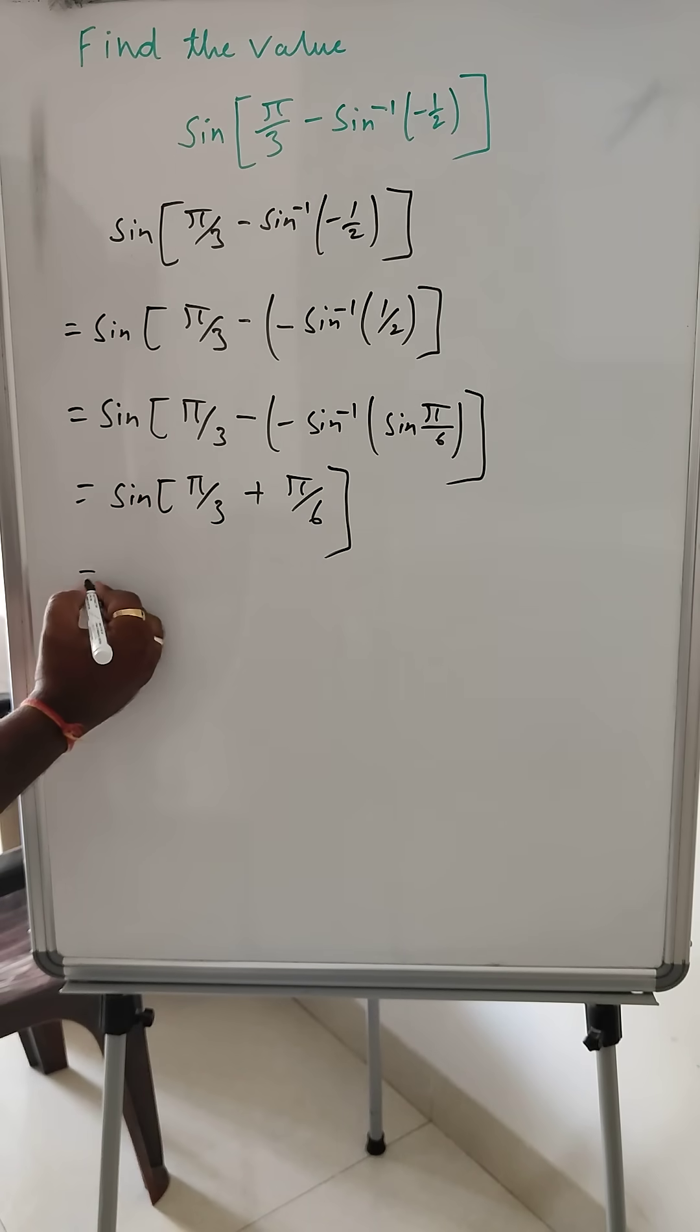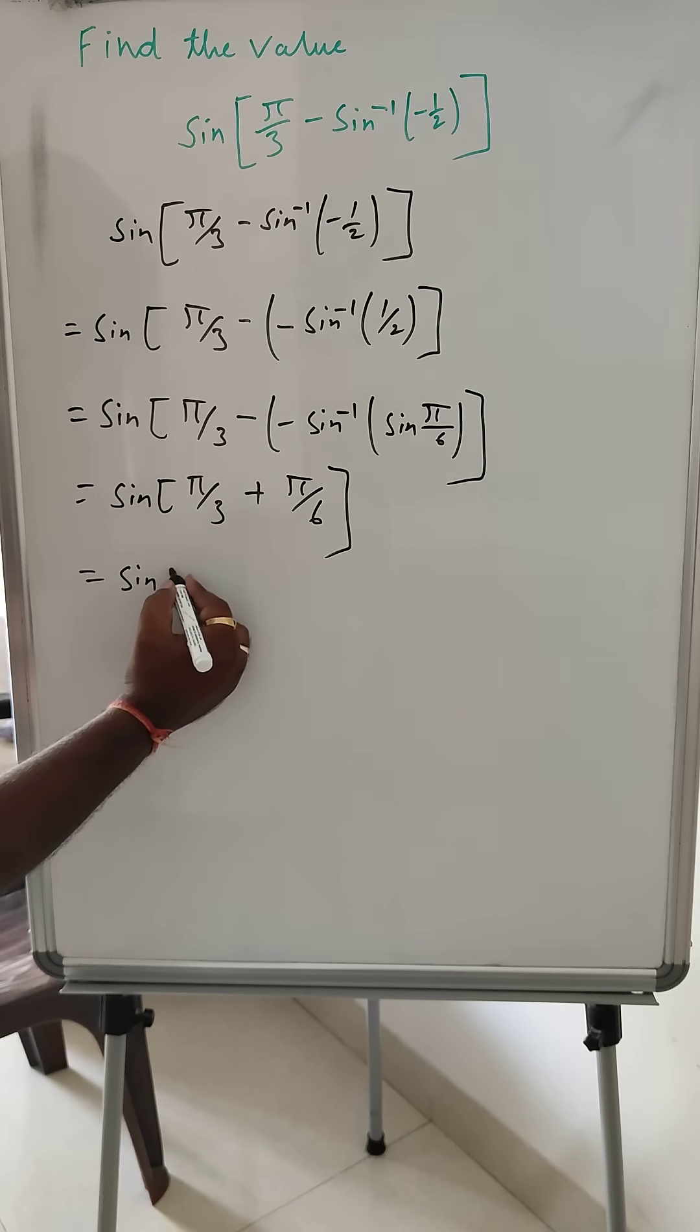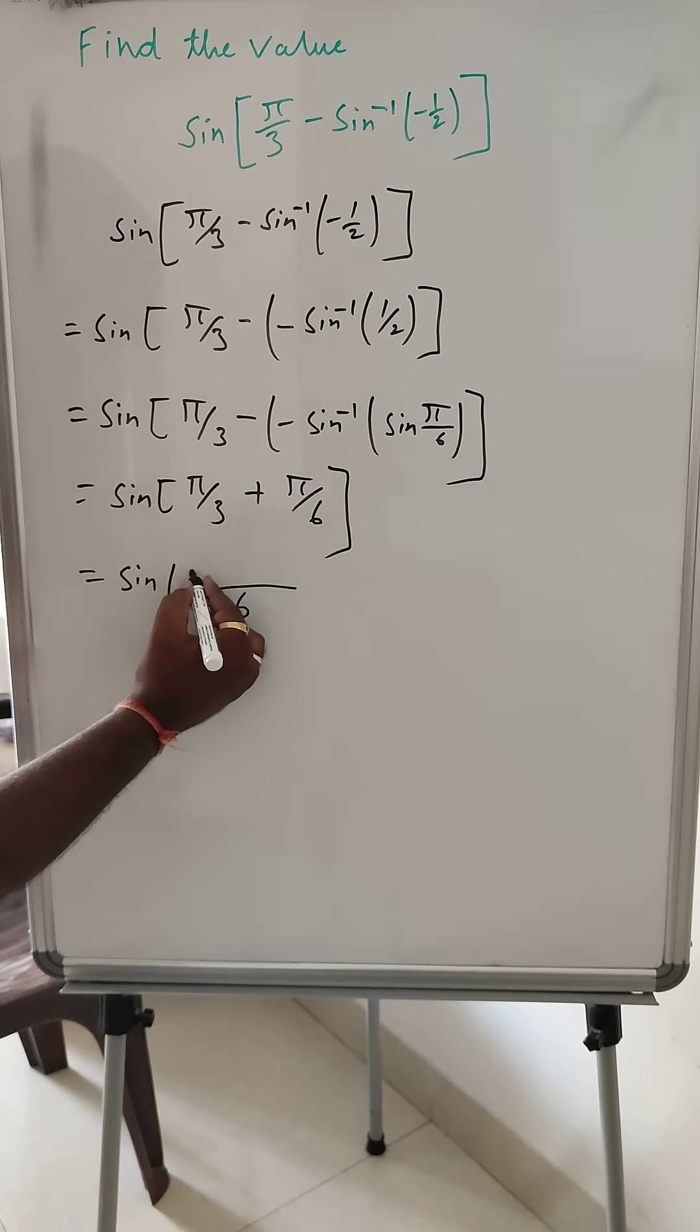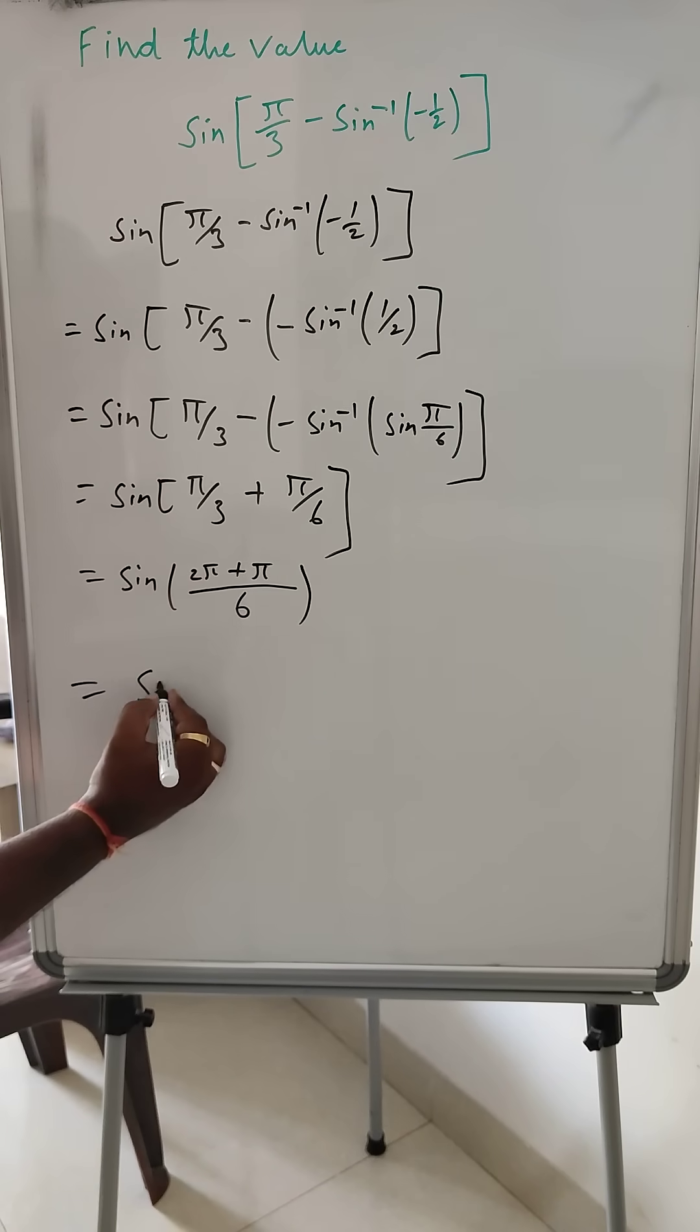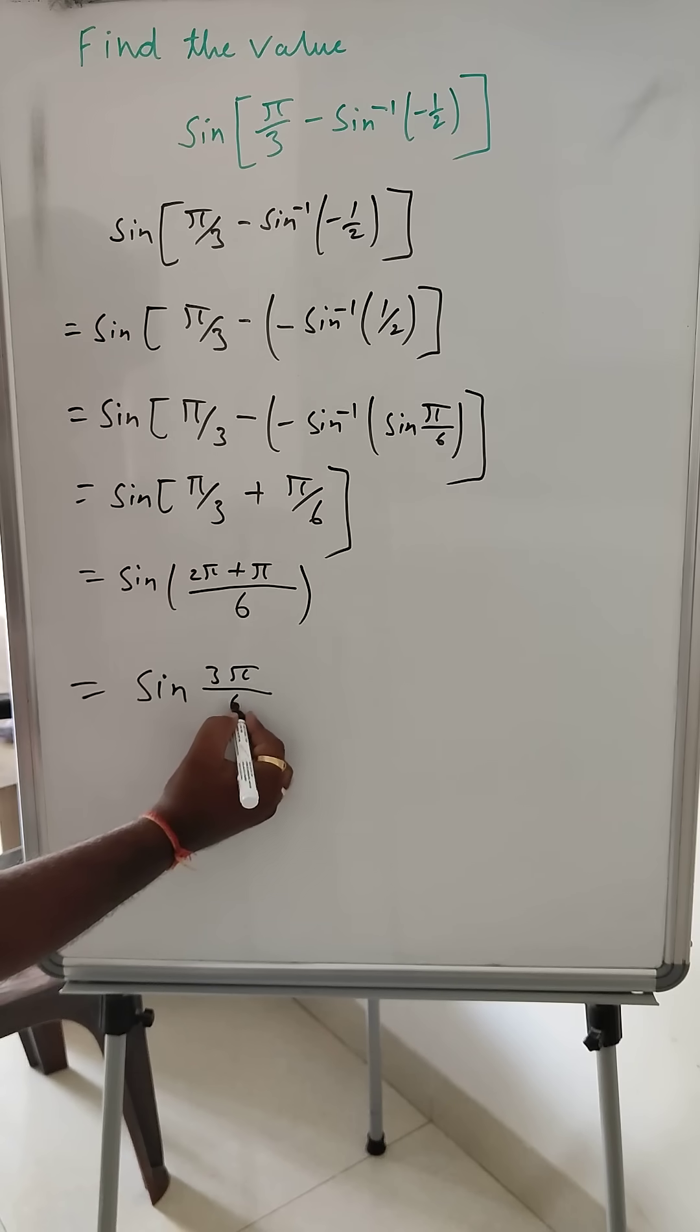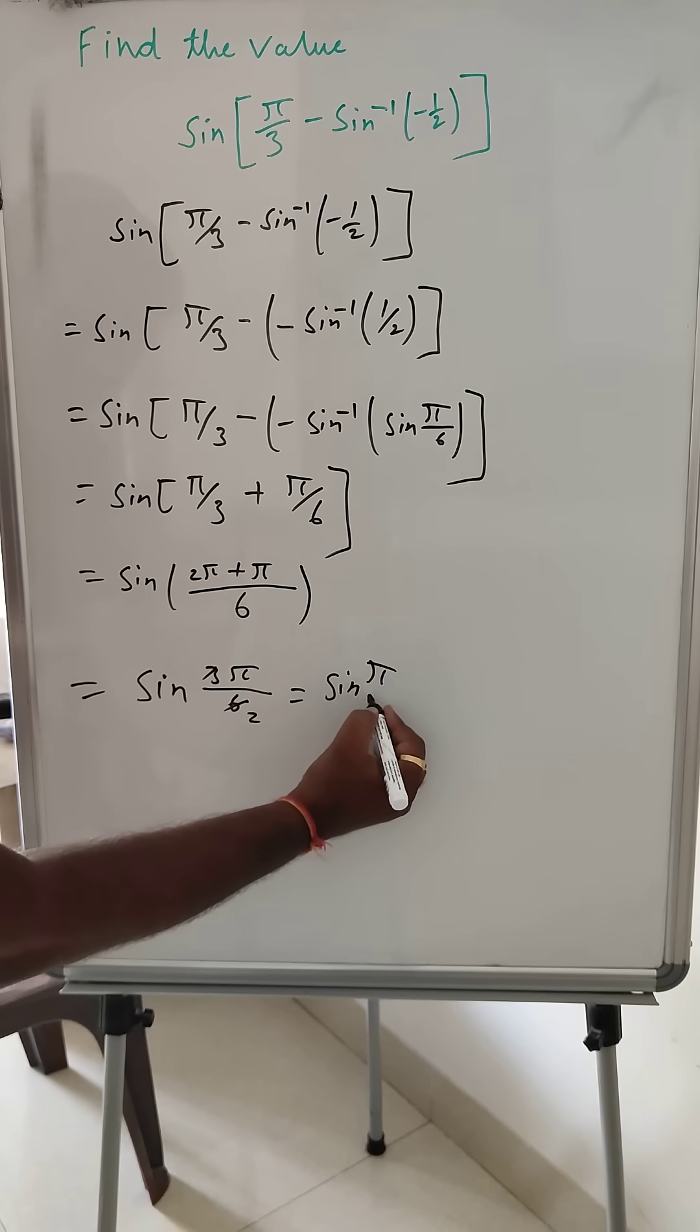So now here this sin will become, we can take LCM 6. 2π plus π. Then we can write sin(3π/6). Then we can write sin(π/2). Sin 90 degrees. Sin 90 degrees is nothing but 1.